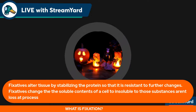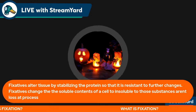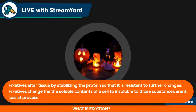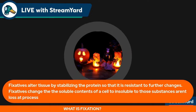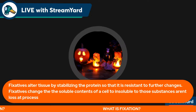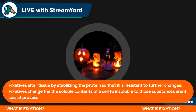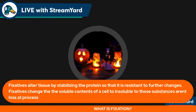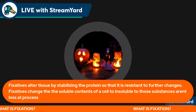Fixatives alter tissue by stabilizing proteins so the tissue is resistant to further changes. Fixatives also change the soluble contents of a cell to insoluble substances so those substances aren't lost during processing. That's the reason tissue is fixed — so that by the time it reaches the lab, the cell structure is still preserved and nothing is lost.